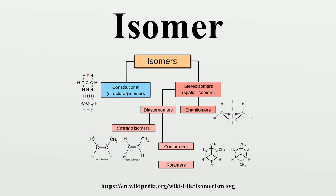There are two main forms of isomerism: structural isomerism and stereoisomerism. In structural isomers, sometimes referred to as constitutional isomers, the atoms and functional groups are joined together in different ways. Structural isomers have different IUPAC names and may or may not belong to the same functional group.